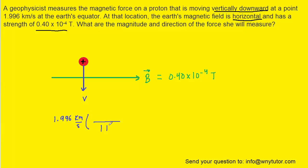To do that, we use the fact that one kilometer is equivalent to a thousand meters. When we cancel out the kilometers and multiply across, we get 1996 meters per second. So these are the given values.